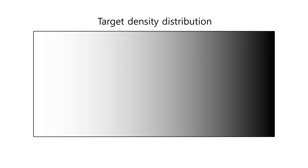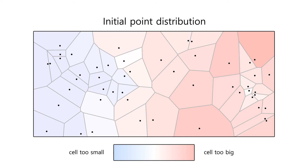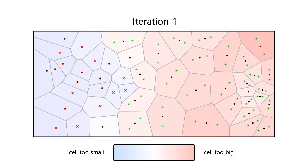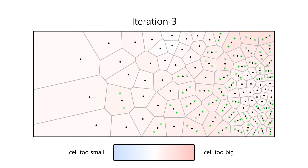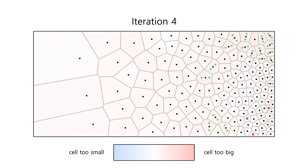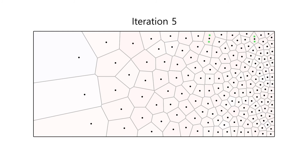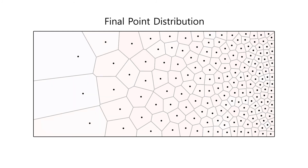Each stipple point represents a fixed amount of ink, thus its associated Voronoi cell should incorporate the same amount of grayscale value from the input image. If a cell is too large, it will be split and an additional point is produced. If the cell is too small, the point will be deleted. All other points are moved to the centroids of their Voronoi cells.